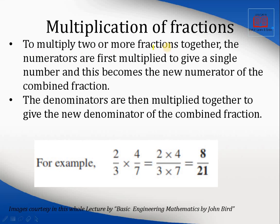To multiply two or more fractions together, the numerators are first multiplied to give a single number, and then the denominators. For example, 2/3 multiplied by 4/7: numerators give 2 × 4 = 8, and denominators give 3 × 7 = 21. Remember, if the fractions are not already in simplified form, a cancellation process may be needed first to simplify as much as possible.